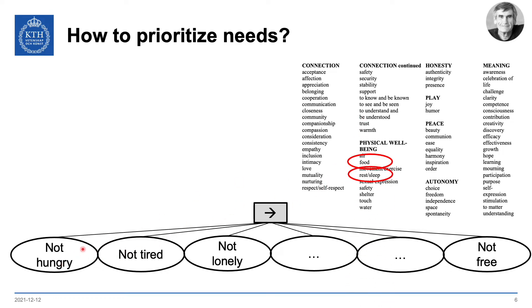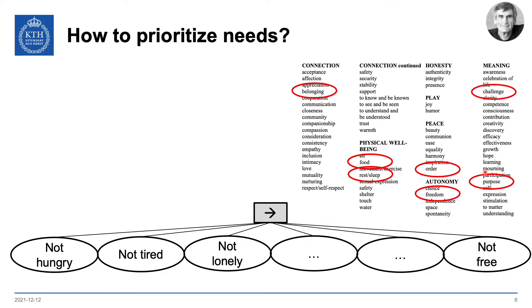Food might be the most important, then perhaps sleep, then belonging. Freedom comes somewhere higher up — not the top priority. But if you look at the need for order, the need for purpose in your life, being challenged — is there a clear priority? Well perhaps not. So then we come to the ideas of utility that we looked at in the previous video.